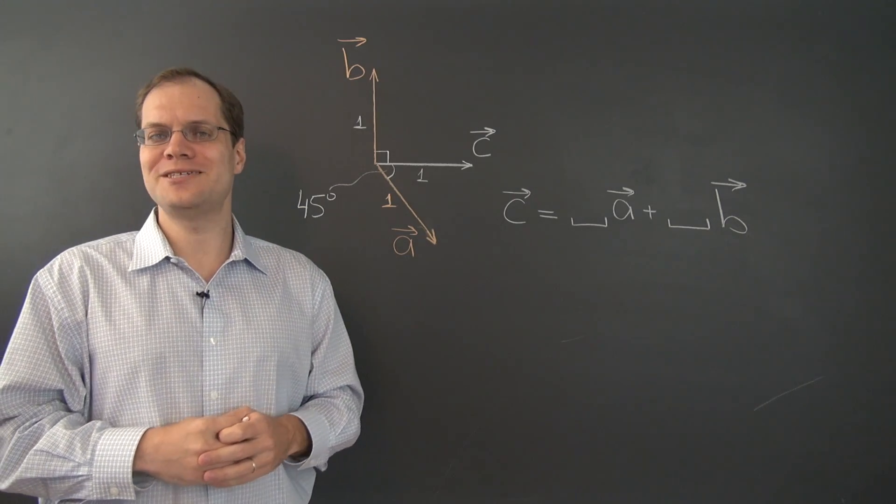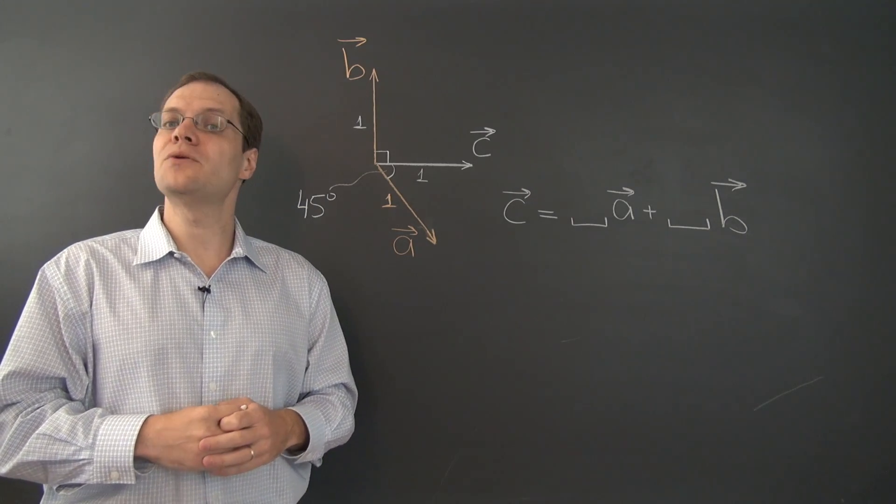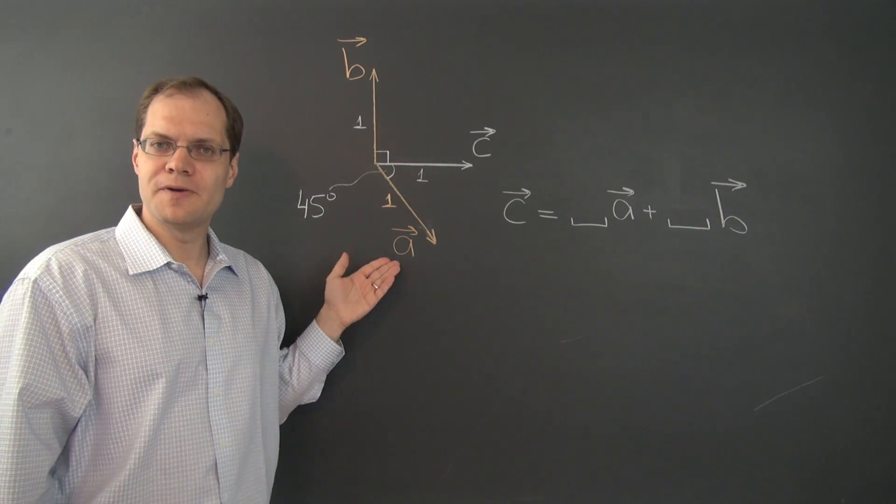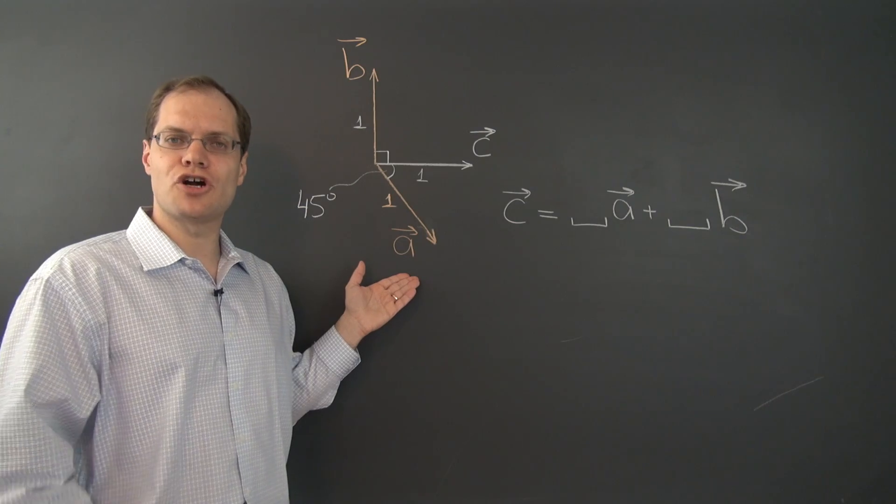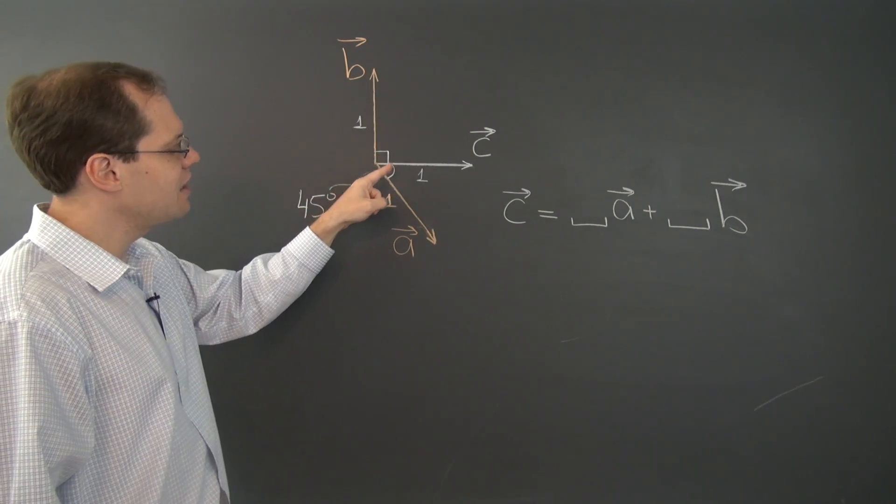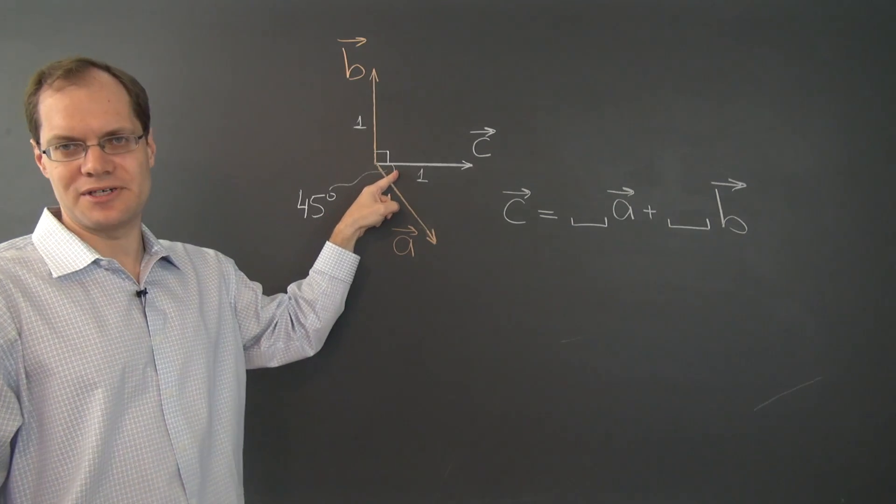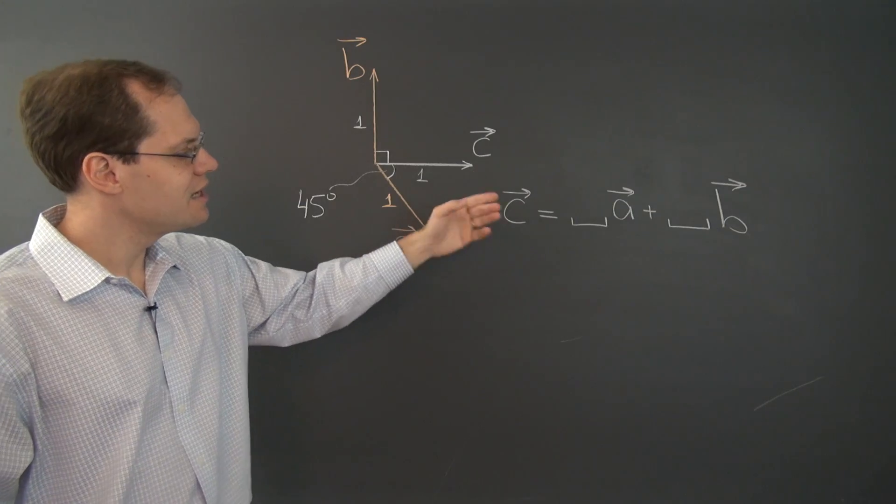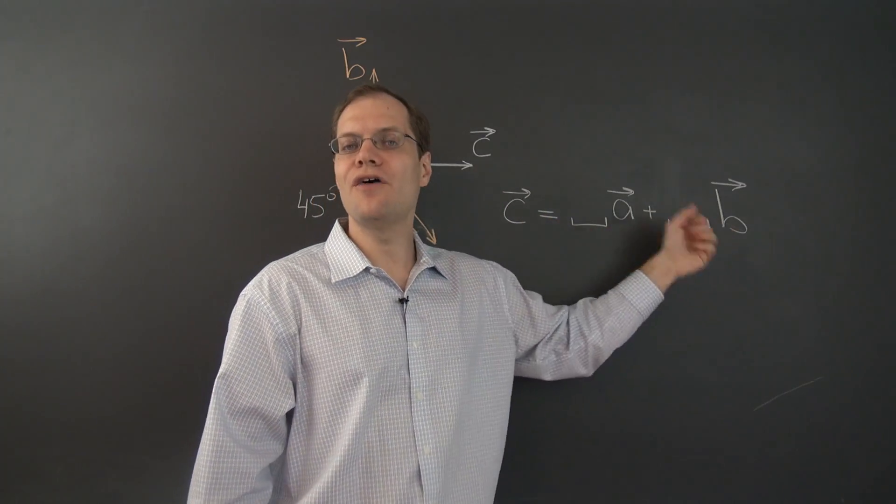Okay, here is one more decomposition exercise in which the geometric vectors are arranged in a very special way. All of the vectors in the picture are unit length, this angle right here is 90 degrees, and this angle is 45 degrees, and the task is to decompose the vector C as a linear combination of A and B.